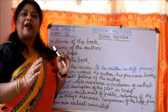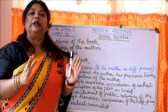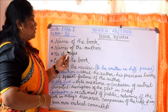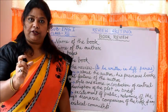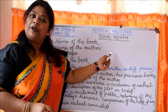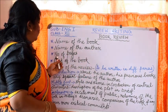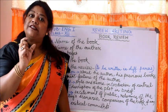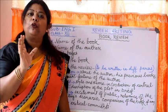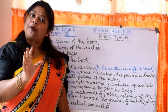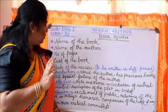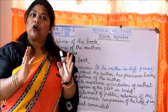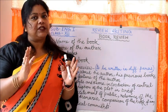First of all, you have to write the name of the book that you are reviewing in your exam paper. Next, you have to write the full name of the author who has written the particular book. Next is the number of pages — you have to write the number of pages that the book contains; it may at times be an approximate number. Next is the cost of the book — how much does the book cost, which can also be an approximate amount.